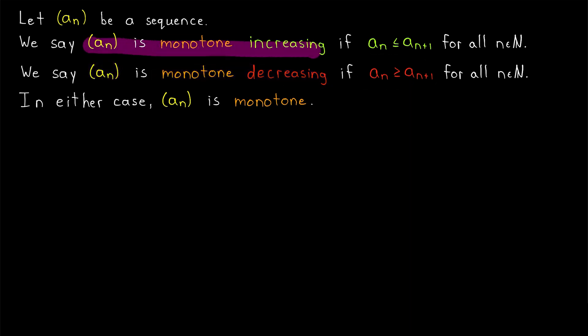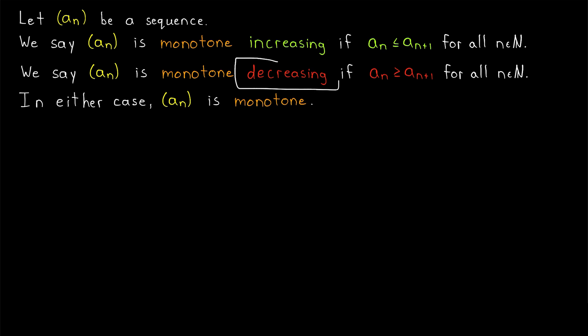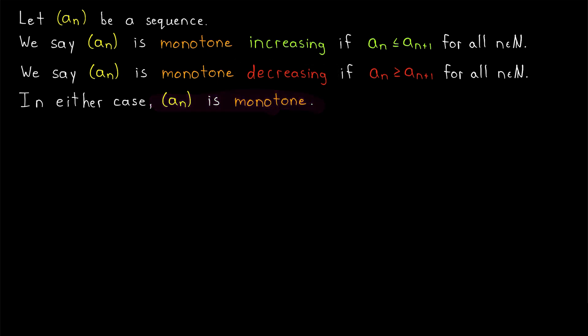If a sequence is monotone increasing, we'll often just say that it is increasing. Similarly, we would just say that a sequence is decreasing. In either case, the sequence is considered monotone — so if we just say a sequence is monotone, it is increasing or decreasing. One weird thing we should quickly point out about this definition: consider the sequence we might represent as just a sequence of ones.